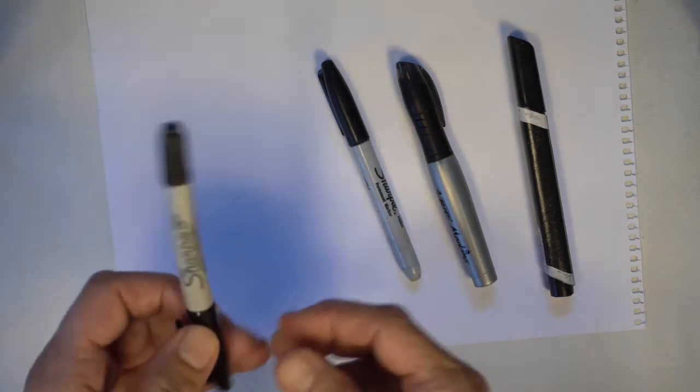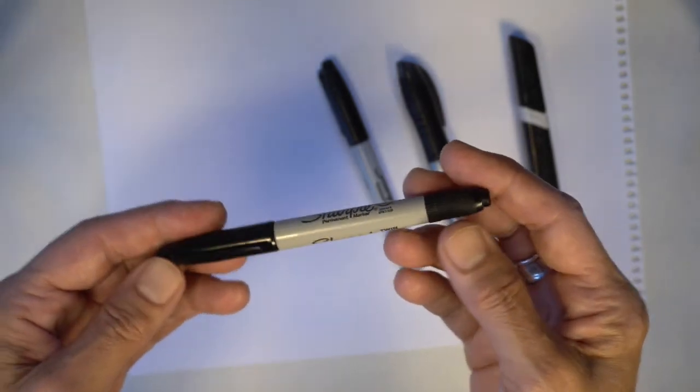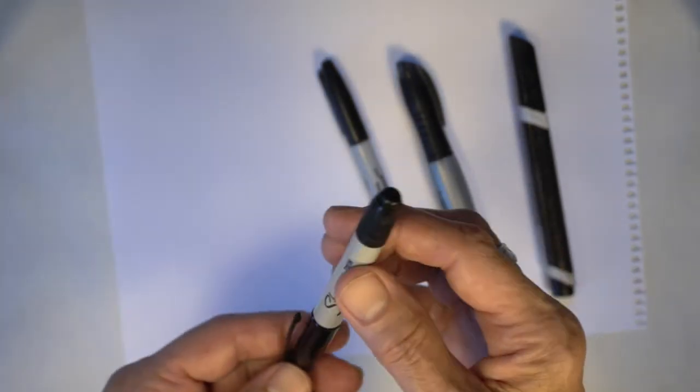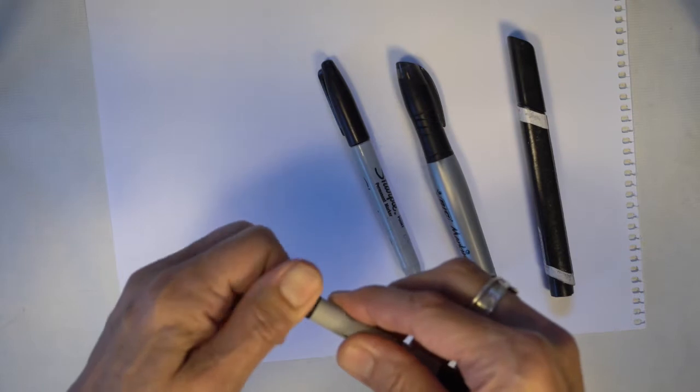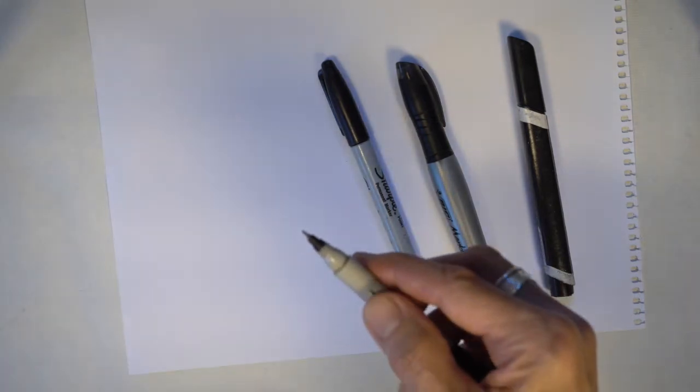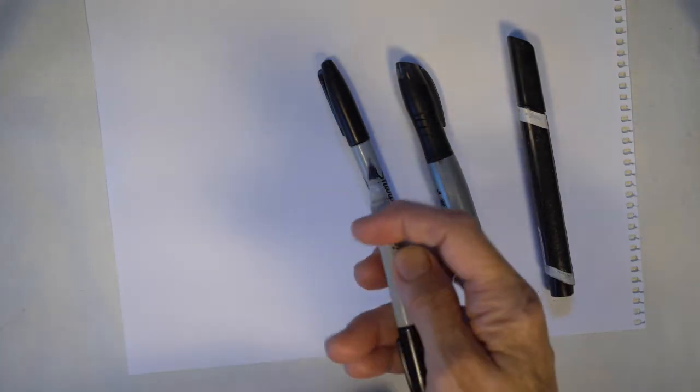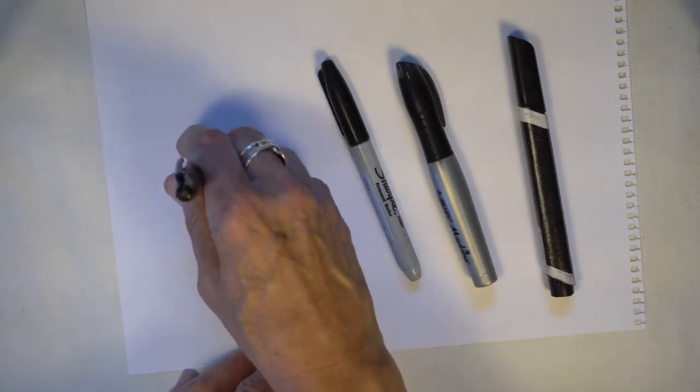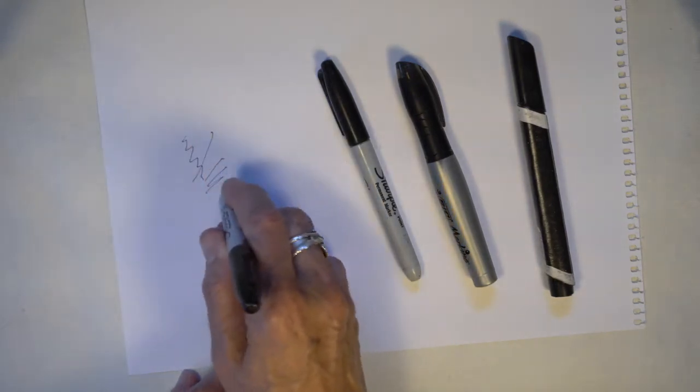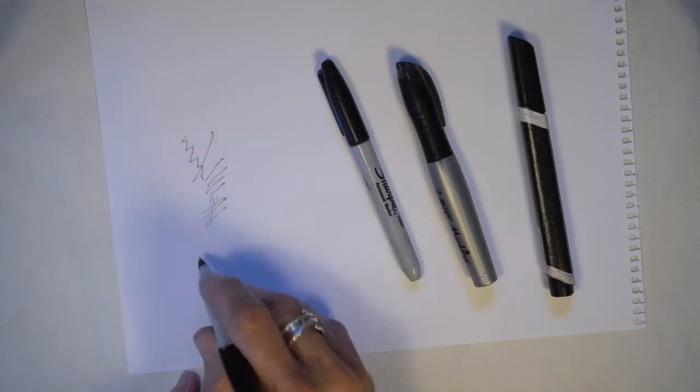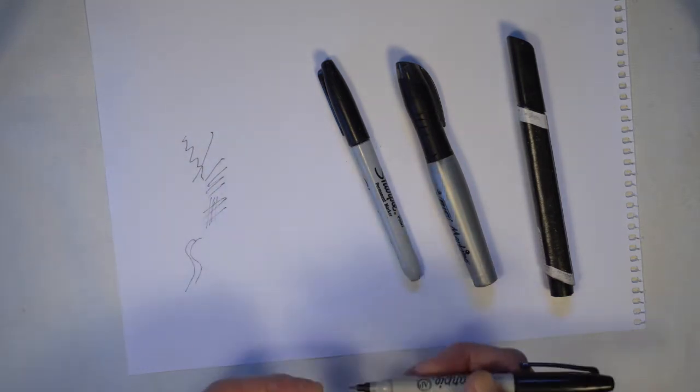So this particular Sharpie is a twin point one or dual point. It has two different types of tips. One of them is the ultra-fine which also comes in just a pen format and it makes lines and marks like this. It's great for doing hatching and outlining kind of work. You make very fine lines with it.